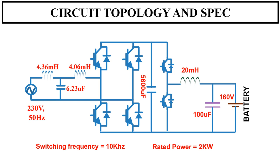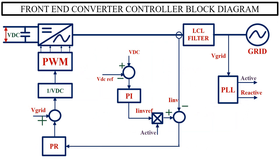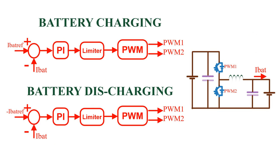Now I will show you the control block diagram used in both the front end converter and bi-directional buck-boost converter. This is the controller used in the front end converter, which regulates 400 V across the DC bus. This is the control block diagram used in the bi-directional buck-boost converter. This controller is used to regulate the battery charging and discharging current.